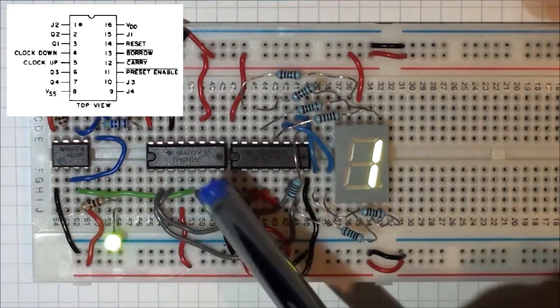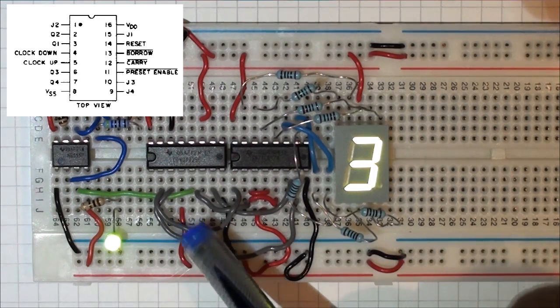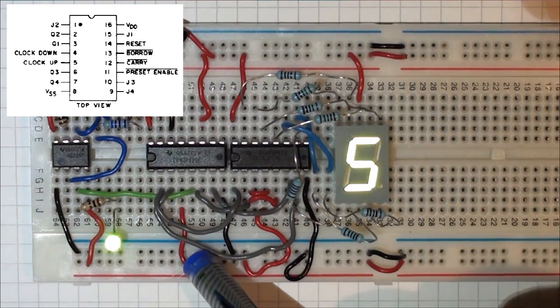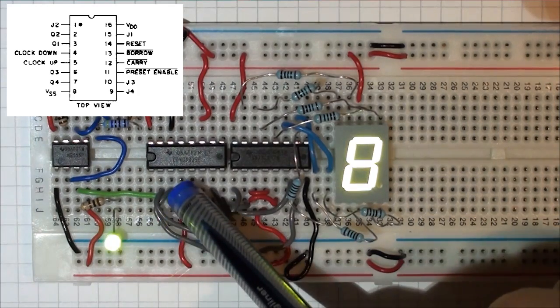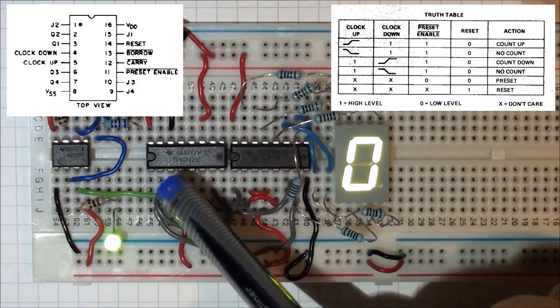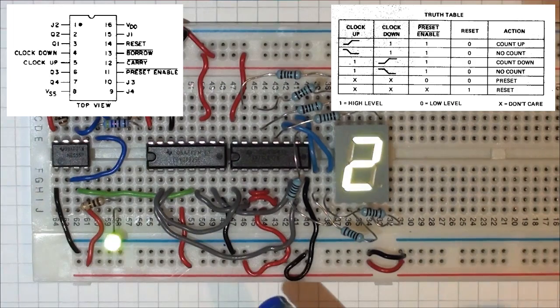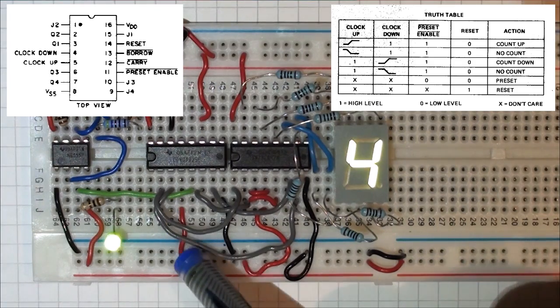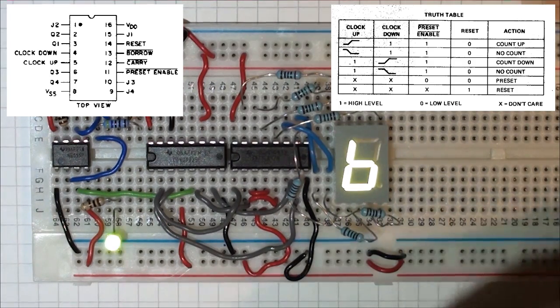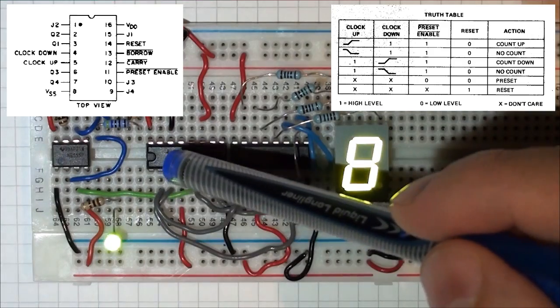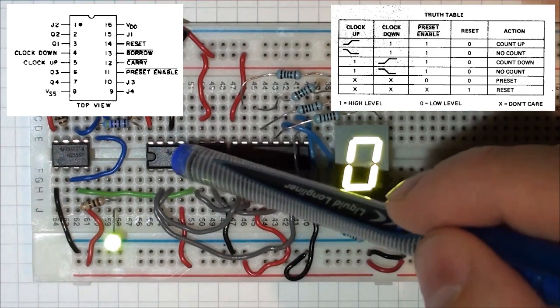And this has pretty much the same configuration, except that it's structured to count up. You can see the green line is running from the counter into the up-down counter. And the down counter is tied to high, which means that we're going to count up.